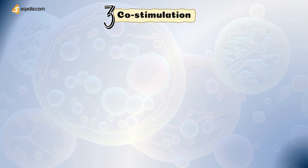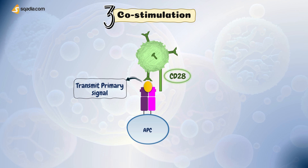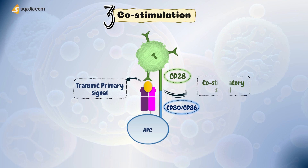Let's understand the co-stimulation process. The initial step of T-cell activation involves the interaction of the TCR on the T-cell surface with the antigen-MHC complex presented by APCs. This binding provides the primary signal required for T-cell activation. Then simultaneously, CD28, a co-stimulatory receptor expressed on the surface of T-cells, engages with CD80 or CD86 molecules expressed on APCs. This interaction is crucial for the transmission of the co-stimulatory signal.